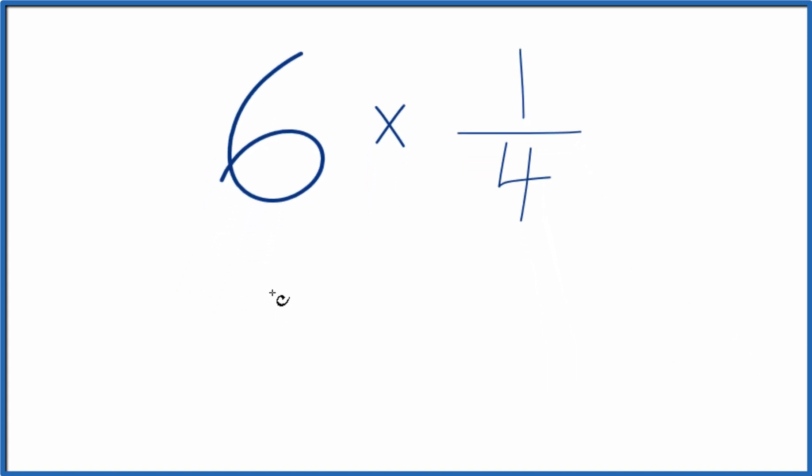Maybe an easier way to do this is to think about this as 6 over 1. It's still 6, now we're just dividing by 1, so we don't change the value.